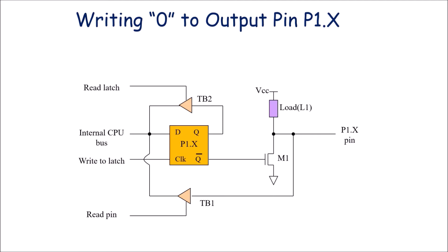To write logic 0 at a port terminal, we send logic 0 on the internal data bus. This 0 is connected to the D input of the internal latch. Since D input is at logic 0, Q output is 0 and Q bar output is 1. Since logic 1 is connected to the gate of the FET, the FET turns on and current flows through VCC, the load resistor, and through the FET to ground. So P1.x is connected to ground — that is, at logic 0. We have written 0 on the data bus and that 0 appears at port terminal P1.x.